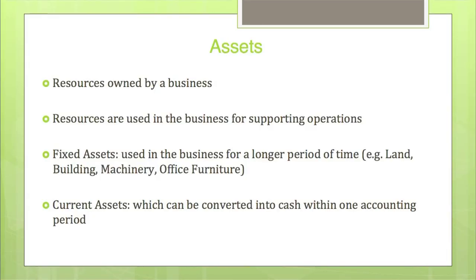Another important term used in accounting is asset. Asset means the properties of the business — these are the resources owned by the business and used for supporting operations, such as production, providing service, etc. We can classify assets as fixed assets and current assets. Fixed assets are used in the business for a very long period of time; in other words, they are purchased with the objective of supporting the operation of the business. A machine used in production will be considered as a fixed asset for the business.